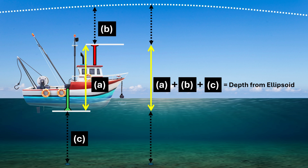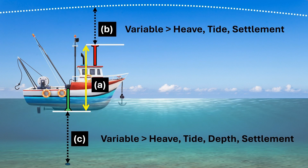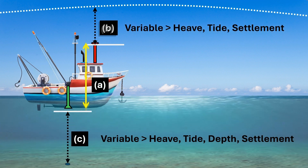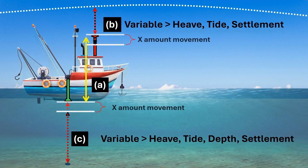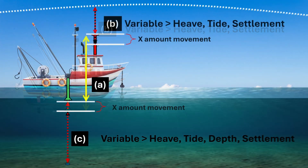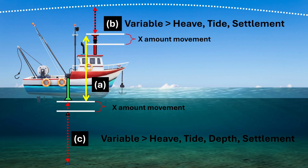Now B and C are variable. As the seabed depth changes, C is going to change. As the tide varies, again C is going to change. The GNSS height B is also variable due to varying tide, heave, settlement, and squat.